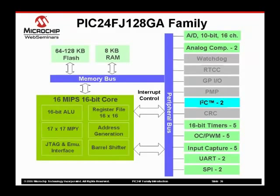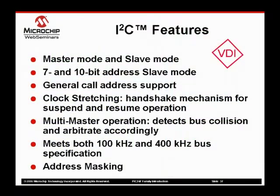The second serial peripheral we will discuss is the I2C interface. The PIC24FJ128GA family contains two dedicated I2C modules. The I2C module in the PIC24F includes independent master and slave logic. The I2C also supports 7 and 10-bit addressing modes. The module supports general call address as defined by the I2C specification. Clock stretching is supported as a handshake mechanism between slave device and master. Multi-master operation is supported, allowing the device to detect a bus collision and arbitrate accordingly.